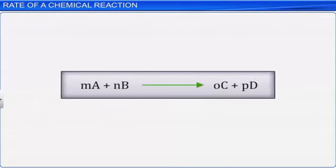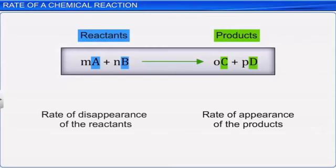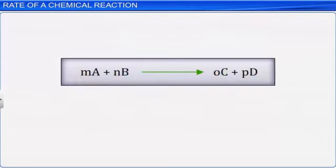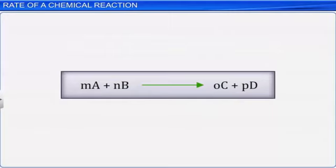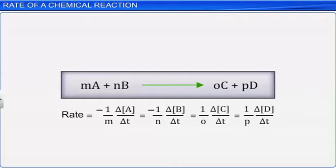Let us now consider a generic reaction where the stoichiometric coefficients of the reactants and products are different. M moles of A react with N moles of B to give O moles of C and P moles of D. We divide the rate of appearance of the products and the rate of disappearance of the reactants by their respective stoichiometric coefficients to get the rate for the overall reaction: −(1/M)(ΔA/ΔT) = −(1/N)(ΔB/ΔT) = (1/O)(ΔC/ΔT) = (1/P)(ΔD/ΔT).